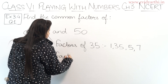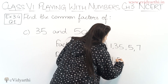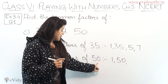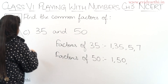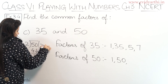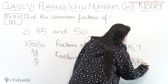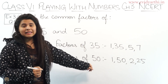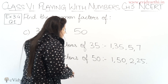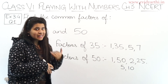Moving to factors of 50: 1 and 50 are factors. Next, 2: since the last digit is 0, 2 is divisible. So 2 into 25 is 50, meaning both 2 and 25 are factors. Then 3 and 4 are not factors. But 5: since the last digit is 0, 5 is a factor. 5 into 10 is 50, so both 5 and 10 are factors of 50.